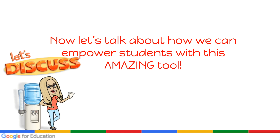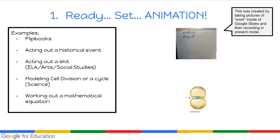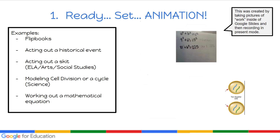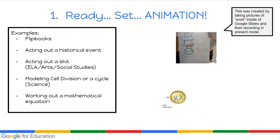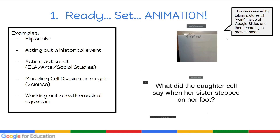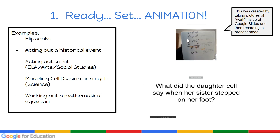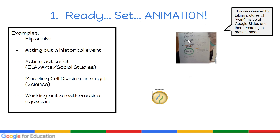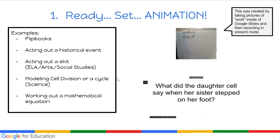Now let's talk about how we can empower students with this amazing tool. Number one: ready, set, animation! You can have students create flip books — acting out historical events, acting out a skit, modeling cell division or a cycle, working out a mathematical equation, or talking about phenomena and diving deeper into math problems. Notice these are just little GIFs. You don't have to download them as GIFs; you can just pause as you're going through. I made this example on Google Slides.